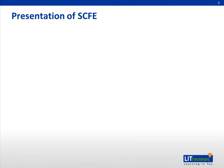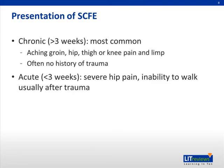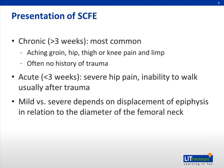The presentation of SCFE varies. There is a chronic form and an acute form, and the severity ranges from mild to severe. Chronic SCFE is most common and is characterized by symptoms of more than three weeks' duration, usually without a recognized trigger. Symptoms include aching groin and pain in the hip, thigh, or knee, accompanied by a limp. Acute SCFE is defined as symptoms of less than three weeks' duration and is characterized by severe hip pain and inability to walk, and is often triggered by trauma. The differentiation between mild and severe depends on the degree of displacement of the epiphysis in relation to the diameter of the femoral neck. Mild means about one-third of the femoral head slips off the thigh bone, while severe is when more than half slips off.